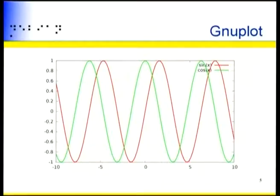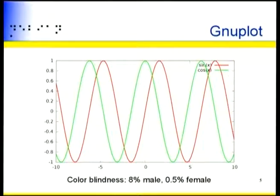To start with, this is the output of gnuplot. Can somebody tell me what the accessibility issue is there? You have green and red bars. Why is it a problem? Basically colorblind people cannot distinguish between both. How many people here are colorblind, cannot distinguish at least some colors? We have two people out of a couple of dozen. Indeed, it's about 8% of the male population who cannot distinguish color, more or less — it depends.